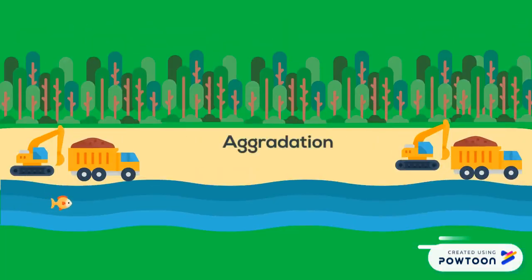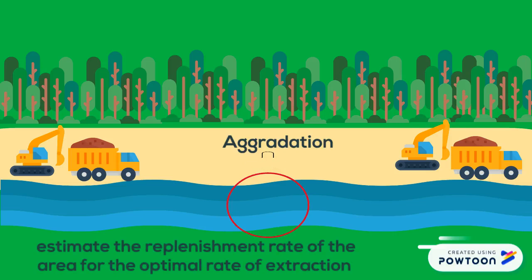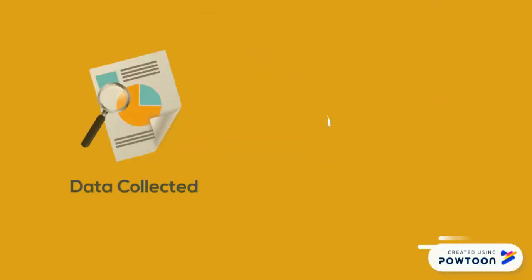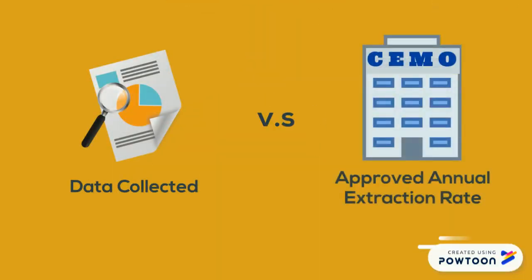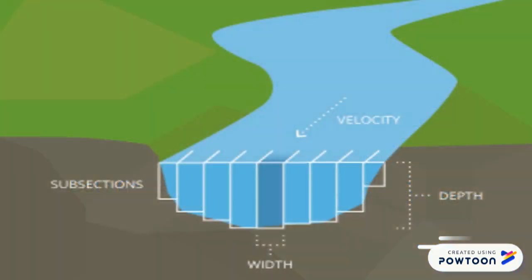The aggradation between two sag mining operations located along the Mandeluk River was determined to estimate the replenishment rate of the area, or the optimal rate of extraction of sand and gravel. The data collected is compared to the approved annual extraction rate given by the City Environmental Management Office of Iligan City. There are a total of six-day sampling periods that were conducted in the area during activity of sag mining operation.